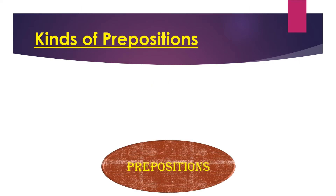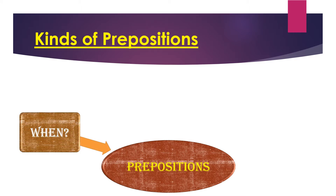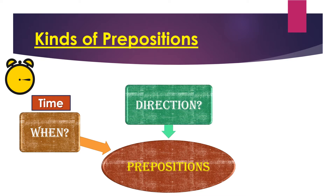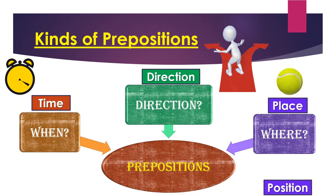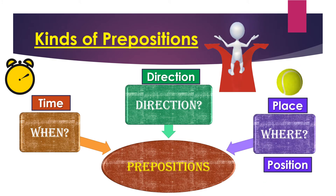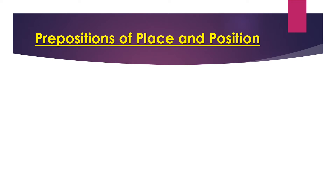There are three kinds of prepositions. The first one: if your preposition refers to time, that is when, then it is a preposition of time. If it refers to direction — the direction in which the object is moving — then it is a preposition of direction. If it refers to place and position, answering the question 'where,' then it is a preposition of place or position. Let us discuss them now in detail.